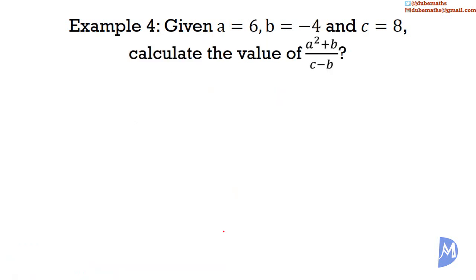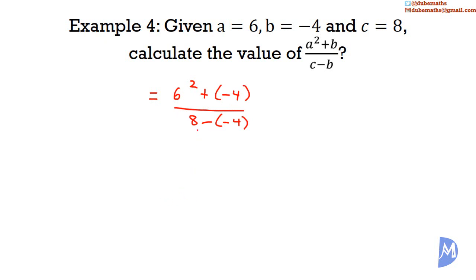A fourth example. Given a is equal to 6, b is equal to negative 4, and c is equal to 8, calculate the value of a squared plus b, all divided by c minus b. So we get 6 squared plus negative 4, all divided by 8 subtract negative 4. Remembering our rules on addition and subtraction of directed numbers: when adding directed numbers we can omit the addition sign, so we get 6 squared subtract 4. And subtracting a directed number is the same as adding with a sign change, so this is the same as 8 added to positive 4.